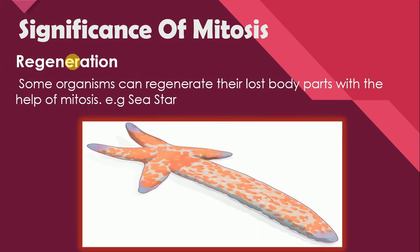Number 3 is regeneration. Some organisms can regenerate their lost body parts with the help of mitosis, like the sea star. It's a diagram of the sea star. The sea star has the ability of regeneration — if any body part is lost, like an arm, the sea star can regenerate it through the process of mitosis.